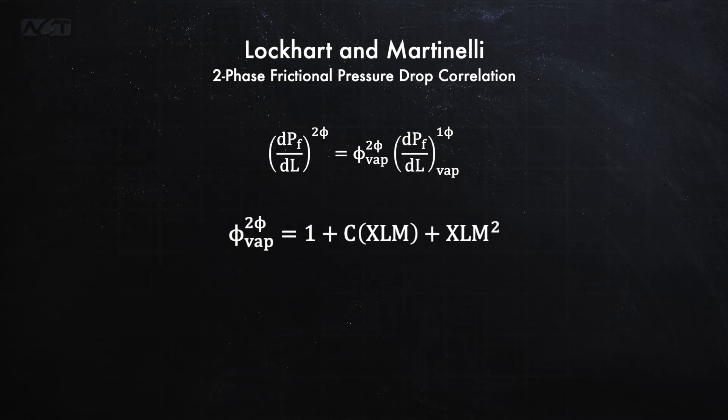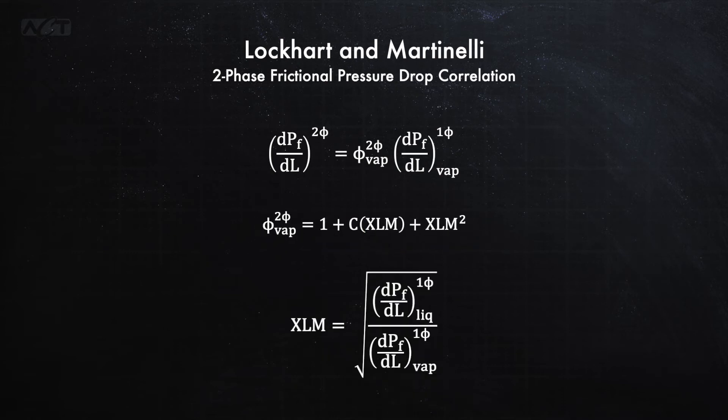The correction factor is calculated using a flow-dependent C parameter and another parameter known as a Lockhart-Martinelli parameter. The Lockhart-Martinelli parameter is the square of the ratio between the pressure drop of the liquid portion of the flow and that of the vapor proportion of the flow. I won't get into all the details of this method here, but it's really well documented in the literature.